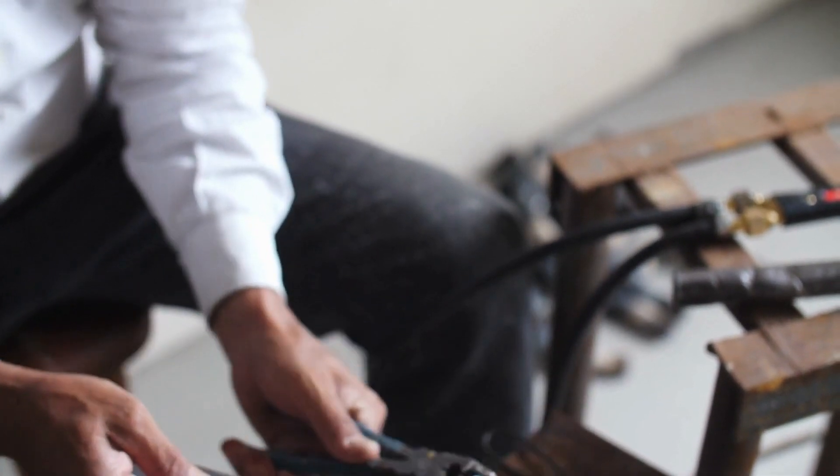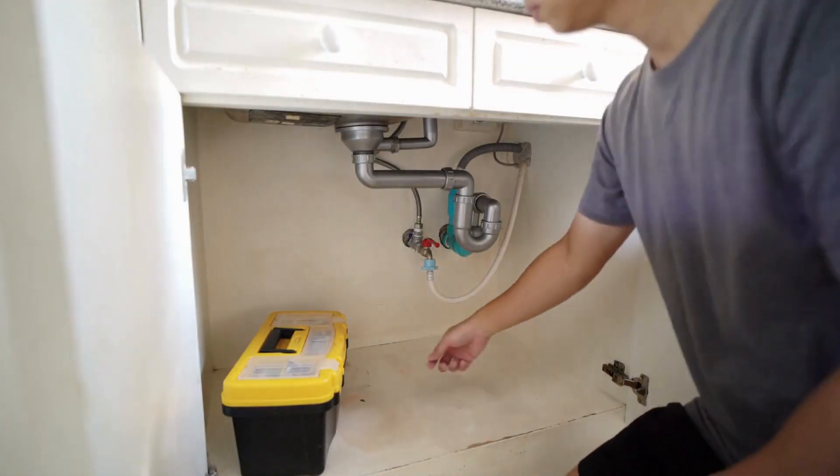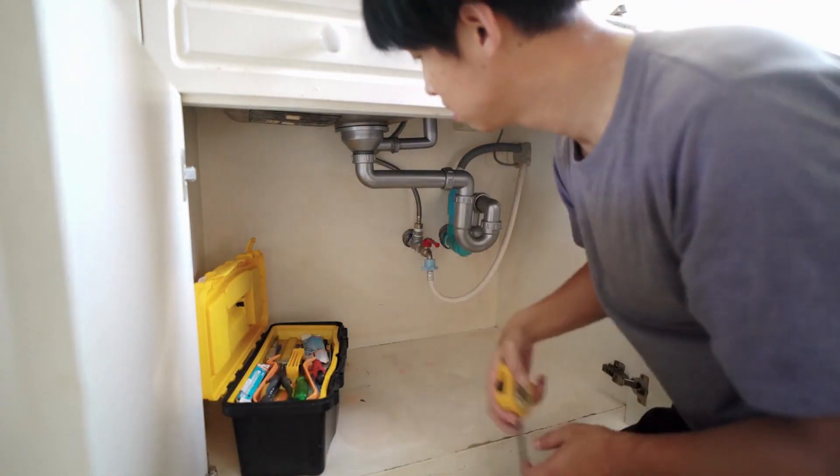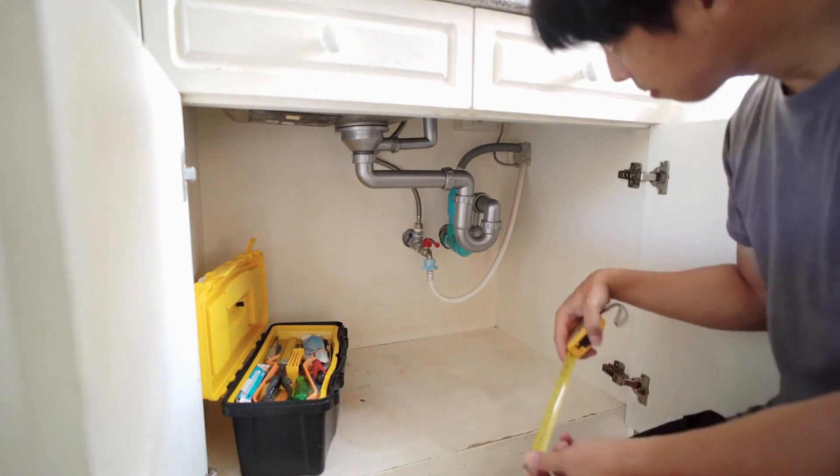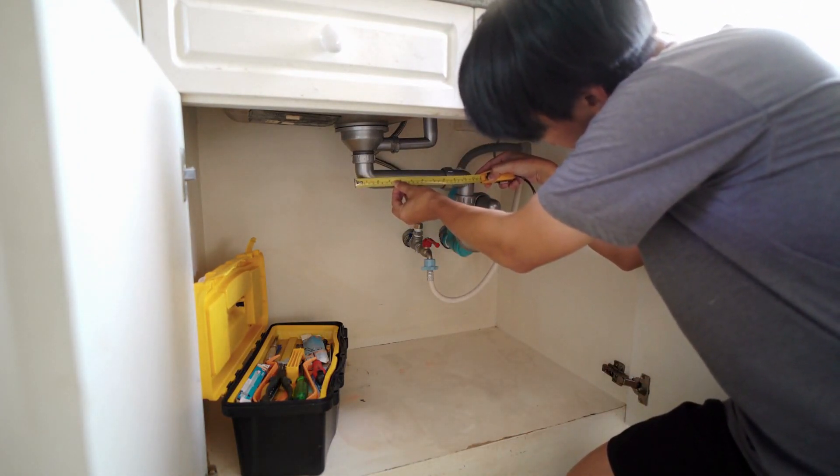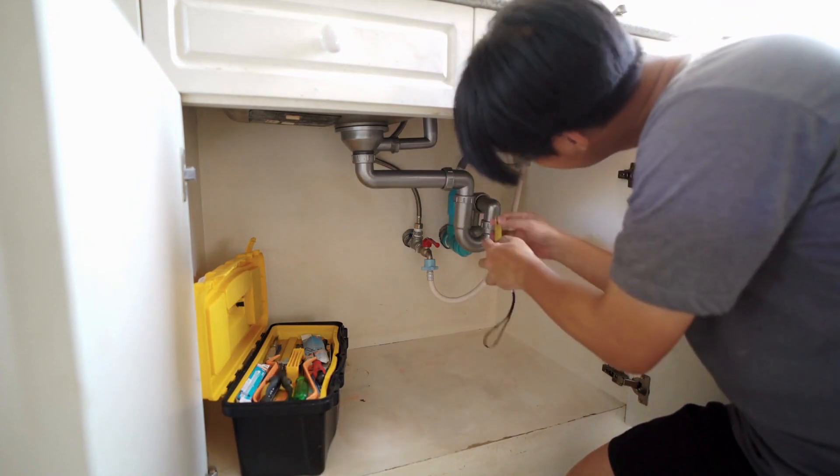However, it's important to note that different types of pipes, such as plastic pipes, may have varying wall thicknesses and measurements. In such cases, you can usually find the size information directly on the pipe itself. To assist you further, I'll provide some general conversion charts for different pipe types.